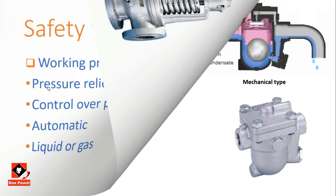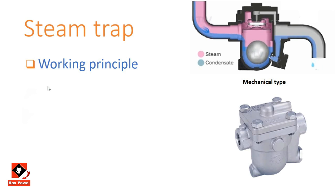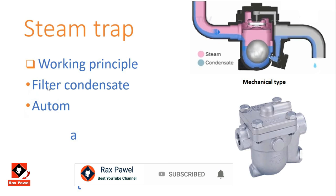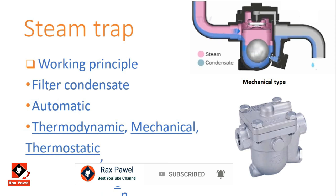Steam trap working principle: it is a device used to filter out condensate from the system to ensure regular flow. When condensate occurs, the steam trap works automatically. There are mainly four types of steam traps: thermodynamic, mechanical, thermostatic, and venturi nozzle.